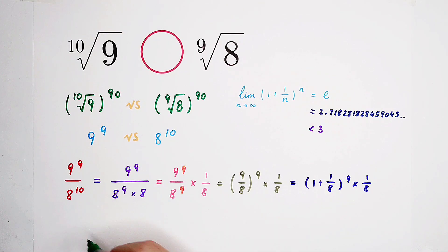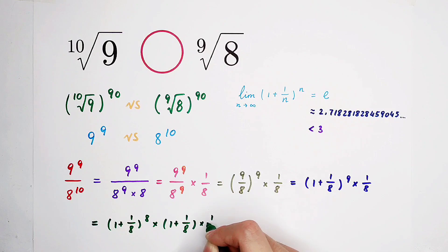So, now, I can write this guy as 1 plus 1 over 8, all to the power of 8, then times 1 plus 1 over 8. For this section, we know 8 is n, and 8 is positive. So, this guy is smaller than 3.